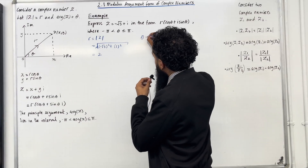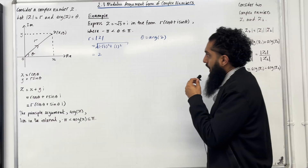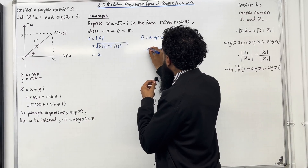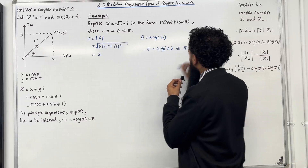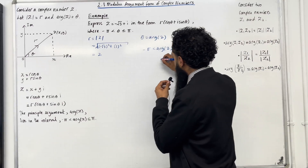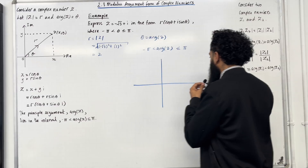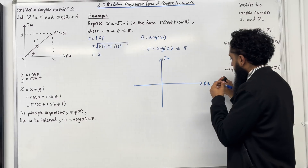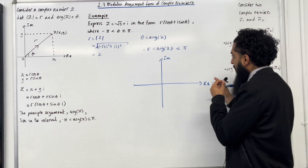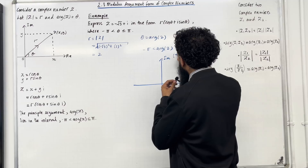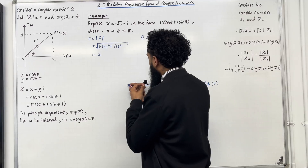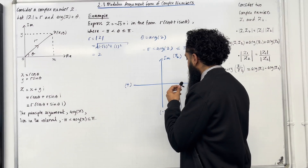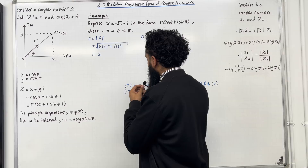Now θ is the argument of z, and the principal argument satisfies −π < arg z ≤ π. I'm going to draw an Argand diagram with the real and imaginary axes. Going anticlockwise: π/2 radians and π radians. Going clockwise: −π/2 radians and −π radians.